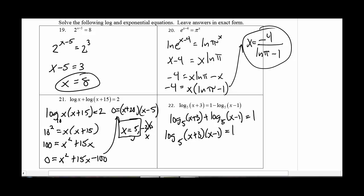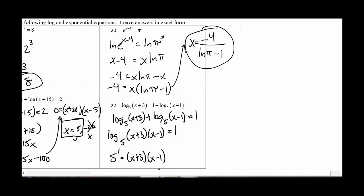And then I want to convert to exponent form. So 5 to the first equals x plus 3 times x minus 1. Now it's quadratic, and we know lots of stuff about quadratics. So 5 equals, I'll just multiply that out. x squared minus x plus 3x minus 3. So that would be plus 2x minus 3.